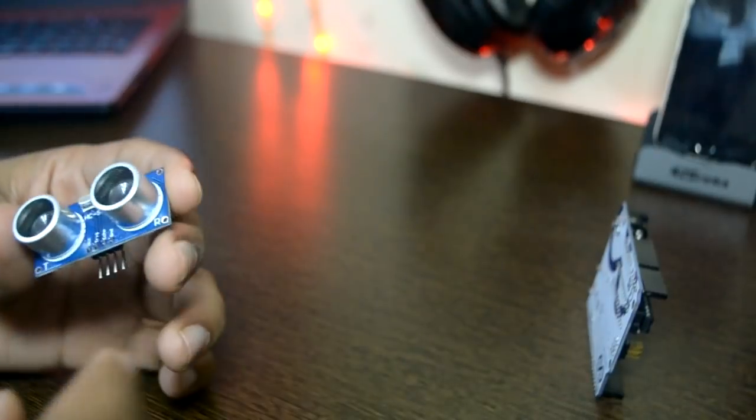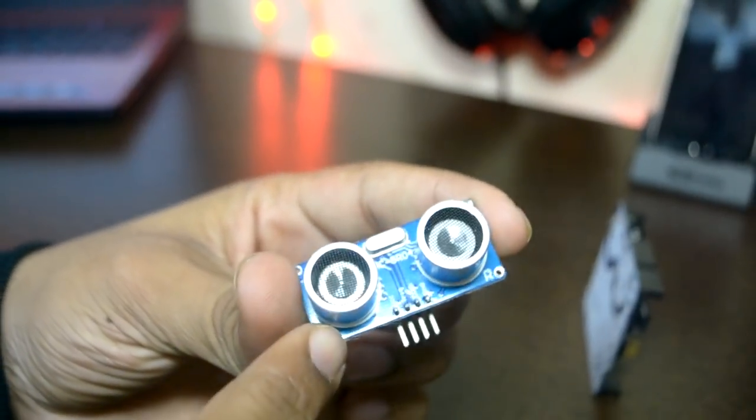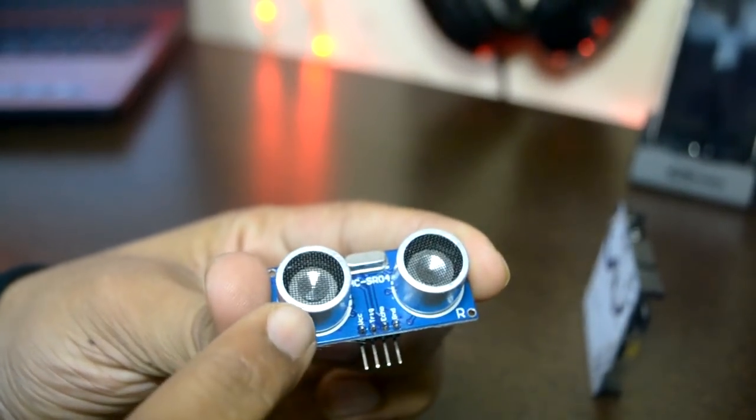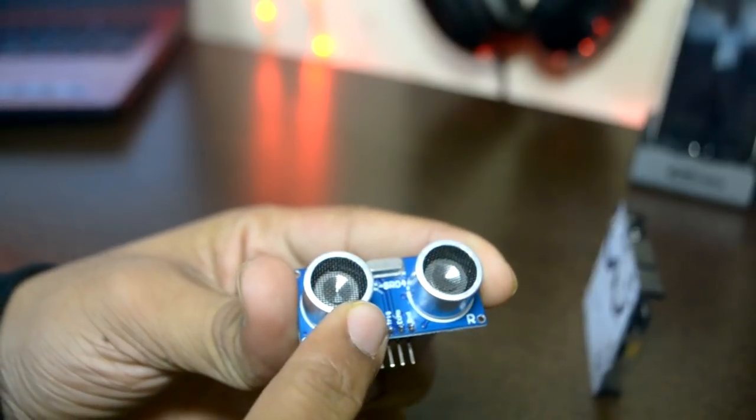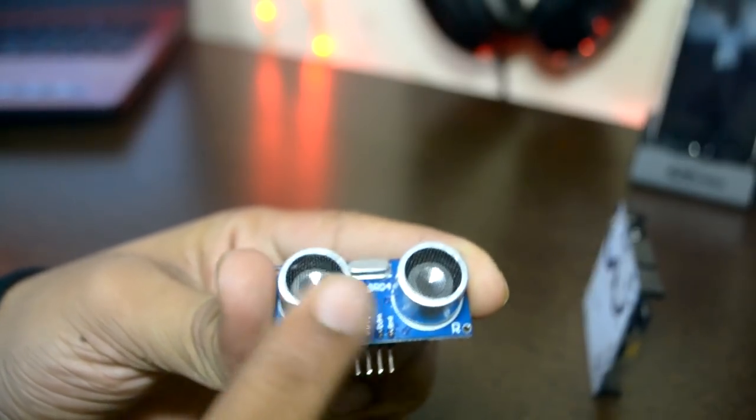Let's see, the object is placed here. This is a transmitter pin. The transmitter will go here. It will travel at the speed of sound. After hitting it, it will be received on the receiver.